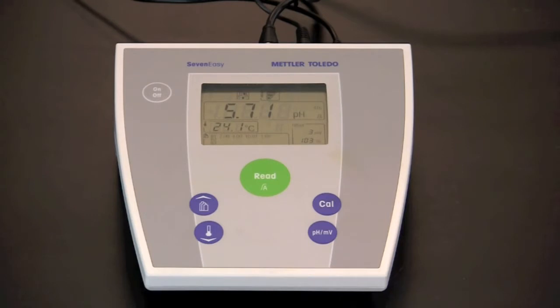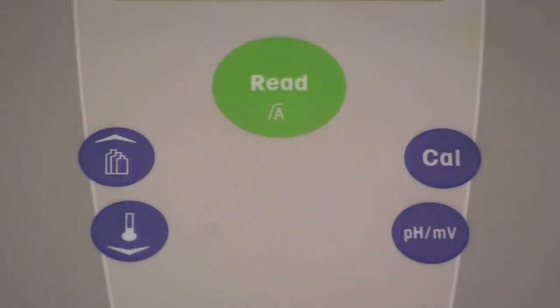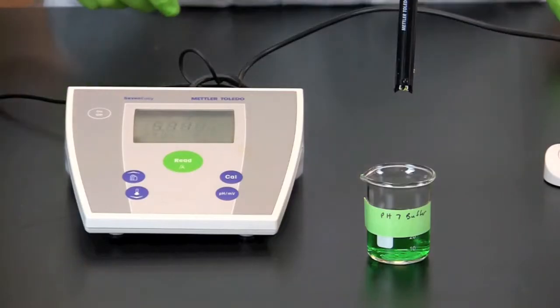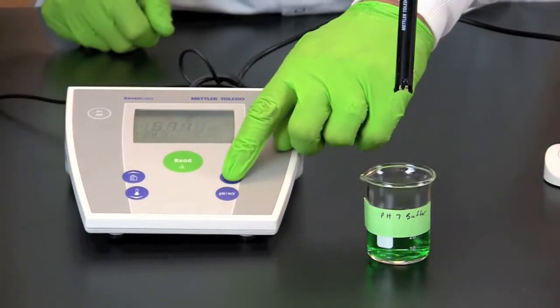Various pH meters will have different procedures for calibration. To calibrate your pH meter you will need to review the owner's manual for the proper procedure. Begin the process of calibration using the standard with a pH of 7.